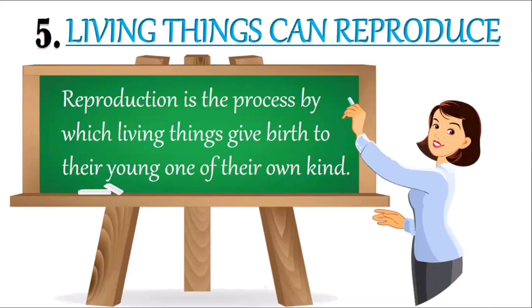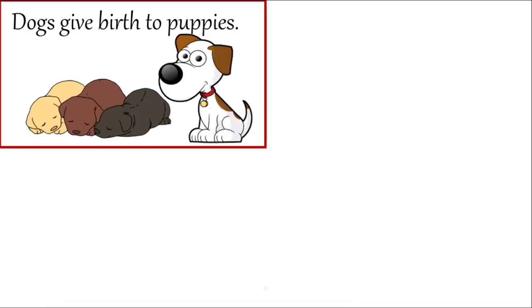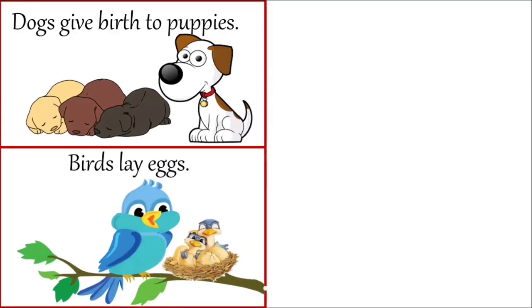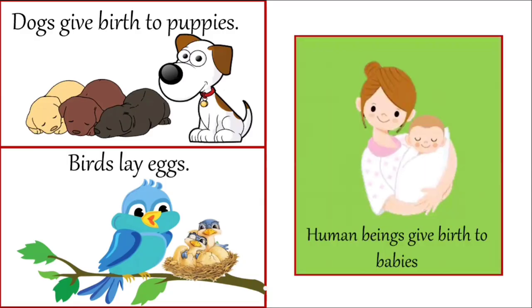Living things can reproduce. Reproduction is the process by which living things give birth to their young ones of their own kind. A dog gives birth to puppies. Birds lay eggs, and the young ones hatch out from these eggs. Human beings give birth to their babies.